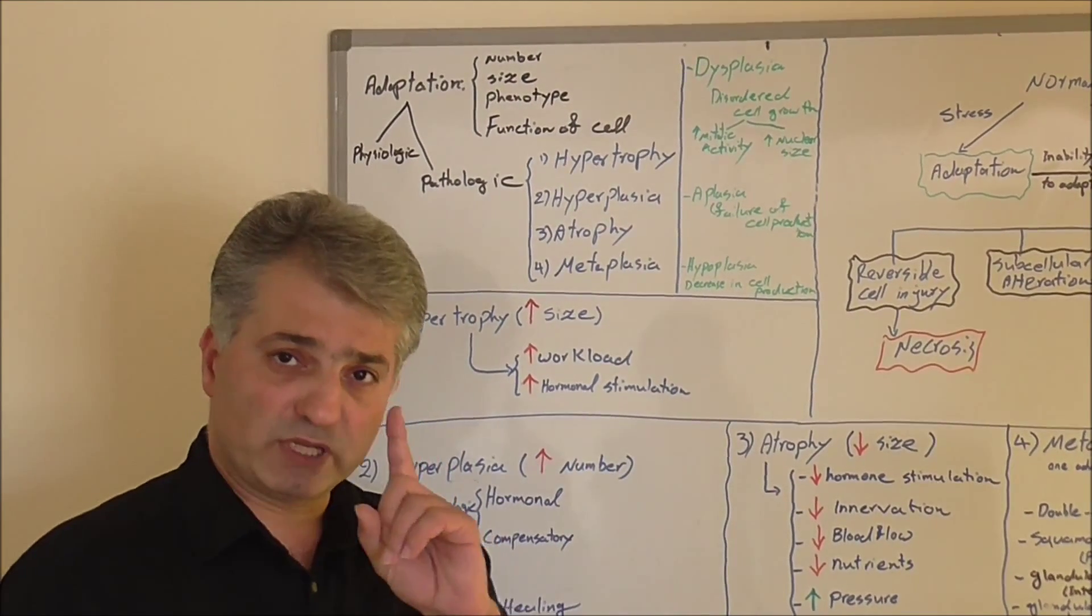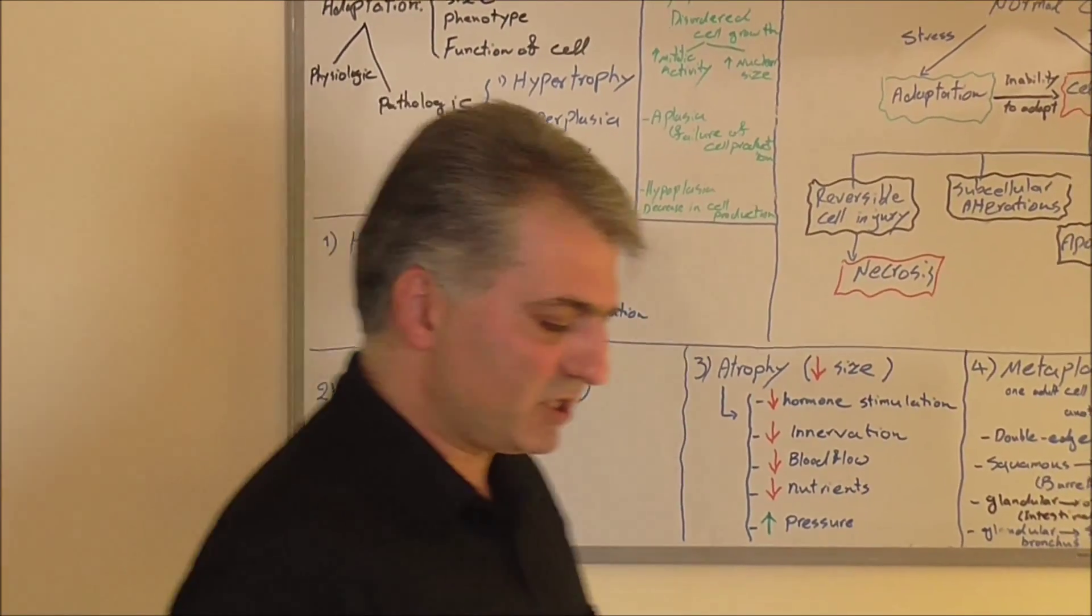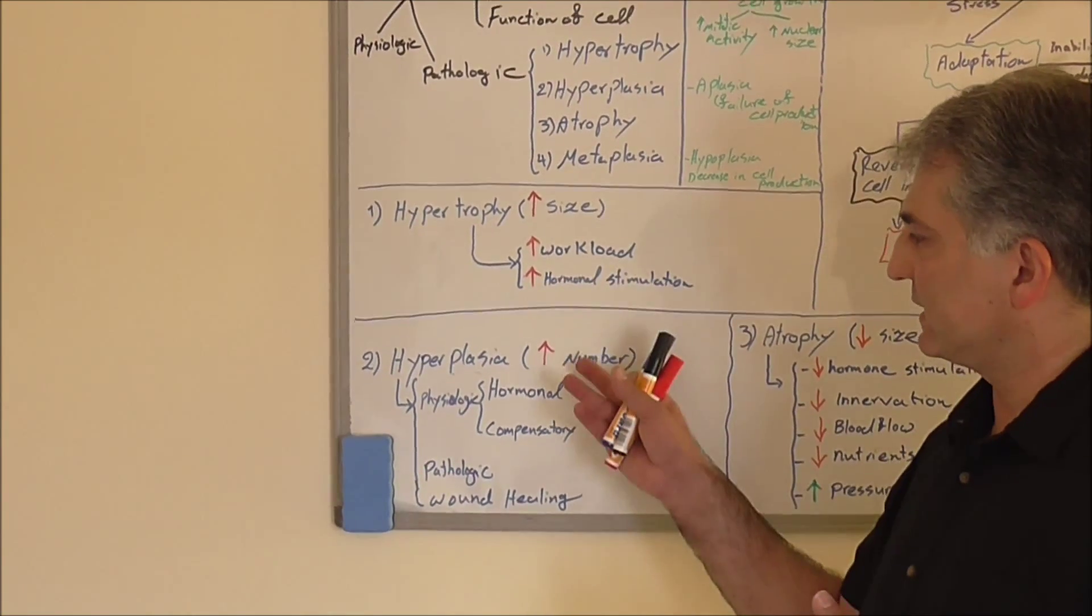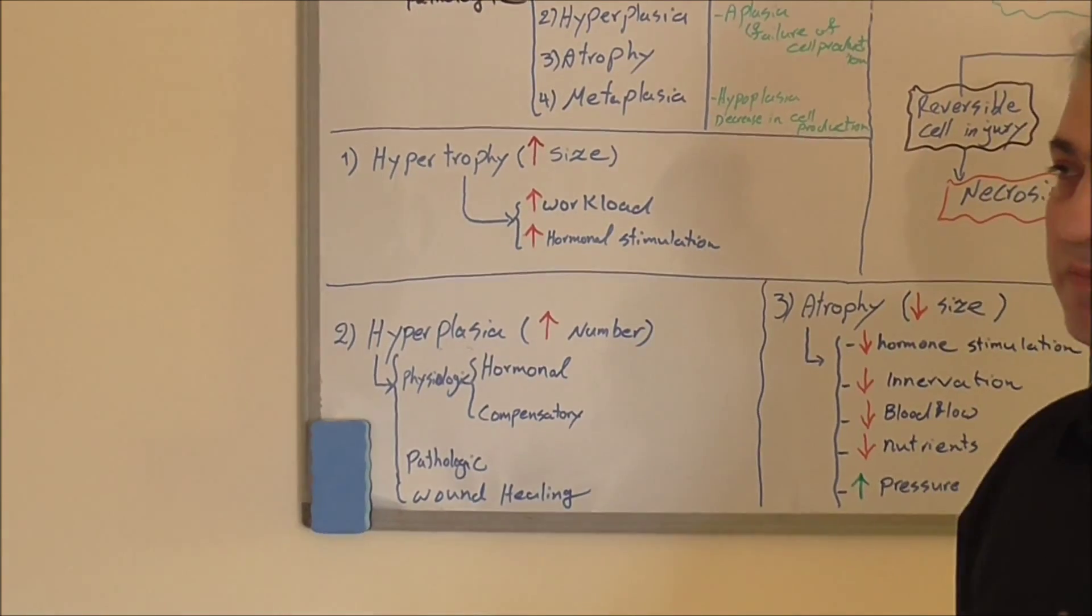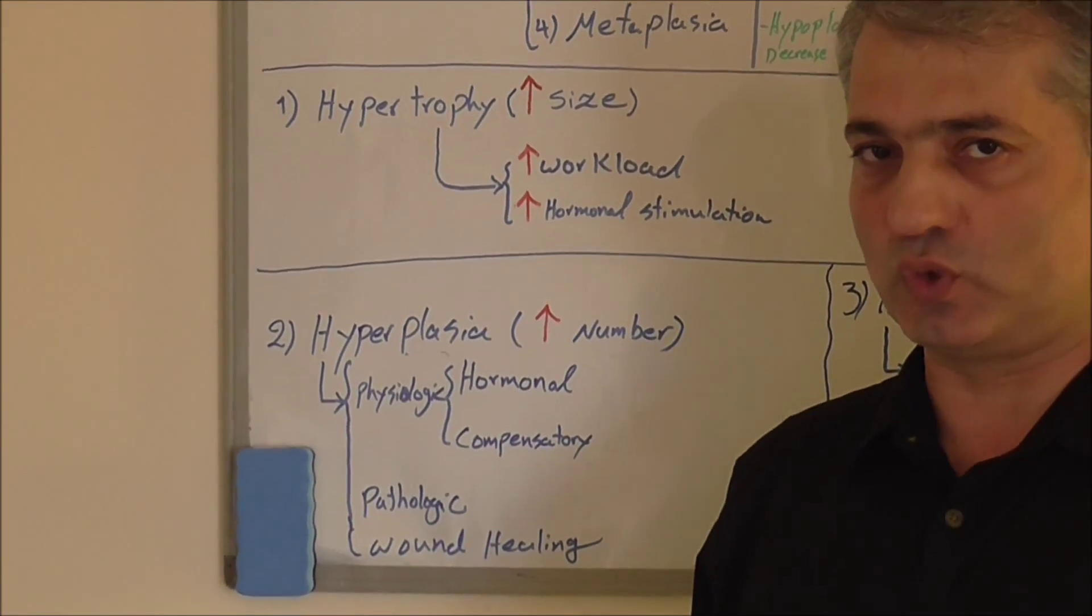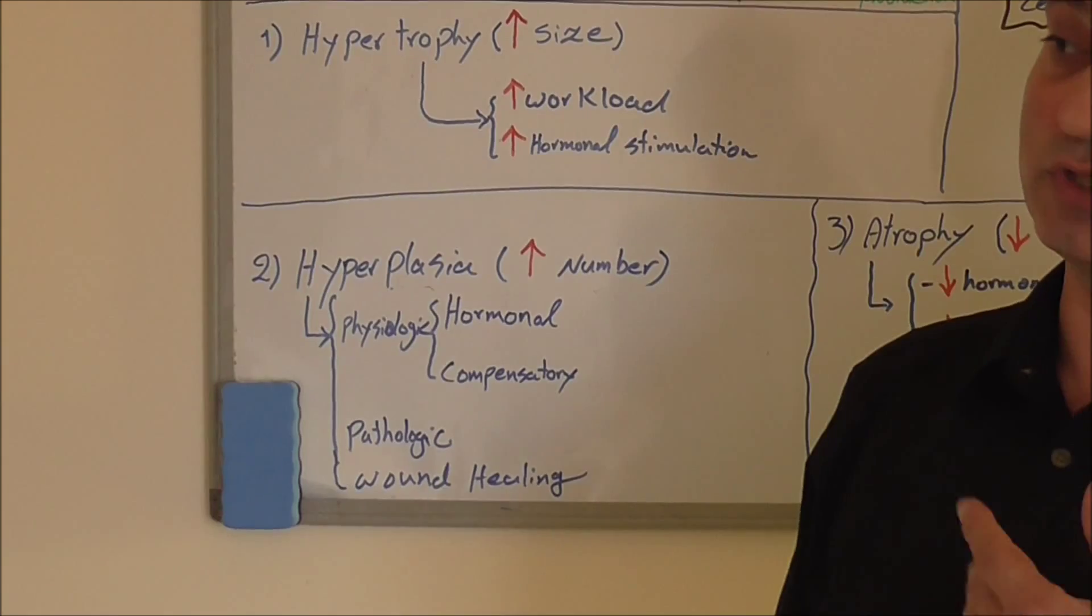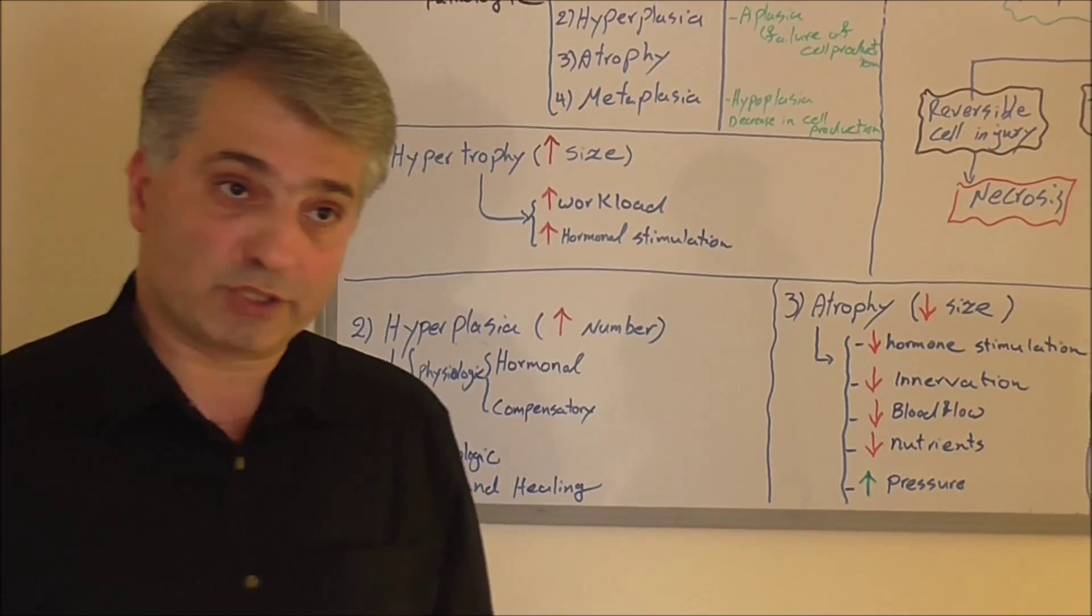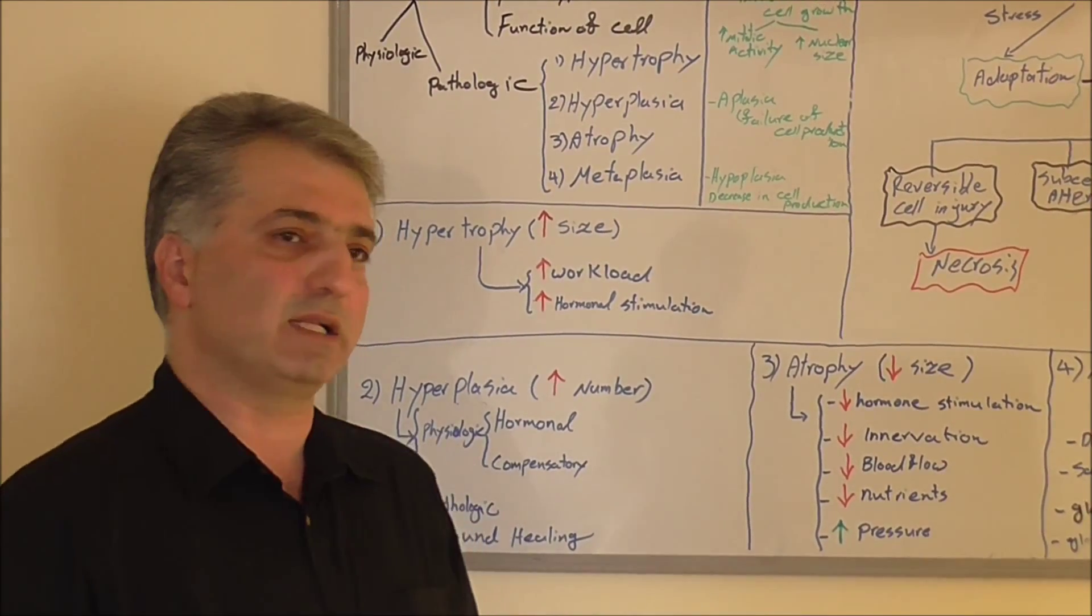Second is hyperplasia. Hyperplasia is increasing the number of cells. In this case, we must have more cells. Of course, not all tissues are able to do that. Some tissue can, which are tissues that have potential to duplicate, or tissues which duplicate every single day.